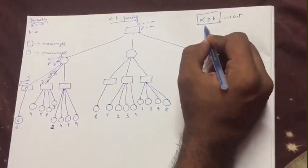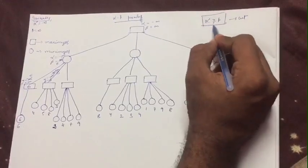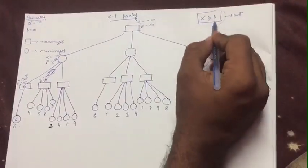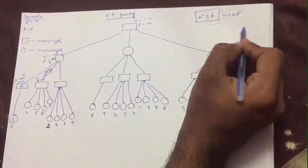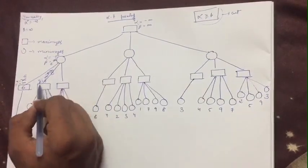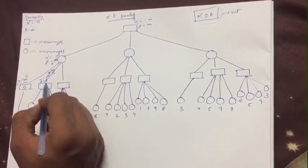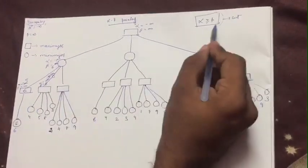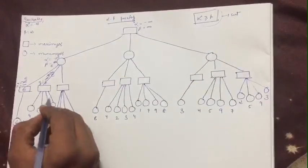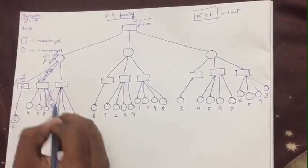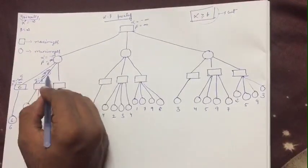One important rule in alpha-beta pruning: we must check the condition alpha greater than or equal to beta. Whenever this relation holds, we cut the remaining nodes and do not traverse them. Here alpha is 8 and beta is 6, so alpha is greater than or equal to beta. Therefore we do not traverse the next node and apply a cut here.